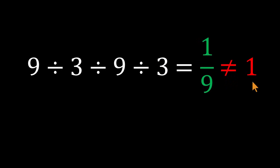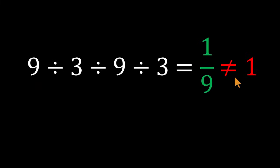1 ninth, not 1. This is why so many clean-looking math problems trip people up — because the moment you start grouping instead of following the order of operations, your answer quietly drifts off course. If this made sense, like the video, share it with someone who loves quick math teasers, and subscribe to Beyond Numbers for more mind-bending math.